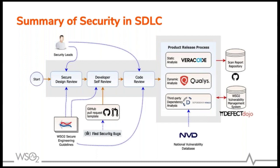All the reports generated by different security scanners are stored in a central scan report repository. As you can recall, there are feedbacks created by team members associated with all the findings generated by different security scanners. These findings are maintained in the WSO2 vulnerability management system. We use OWASP DefectDojo for this purpose. We'll talk about this tool in detail after a few more slides.